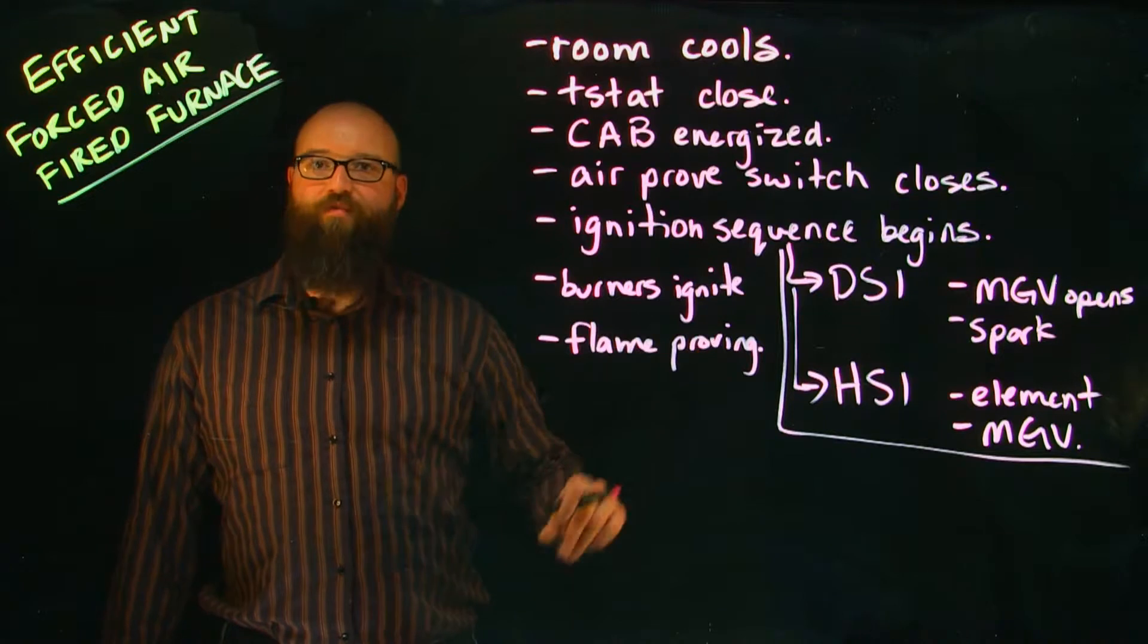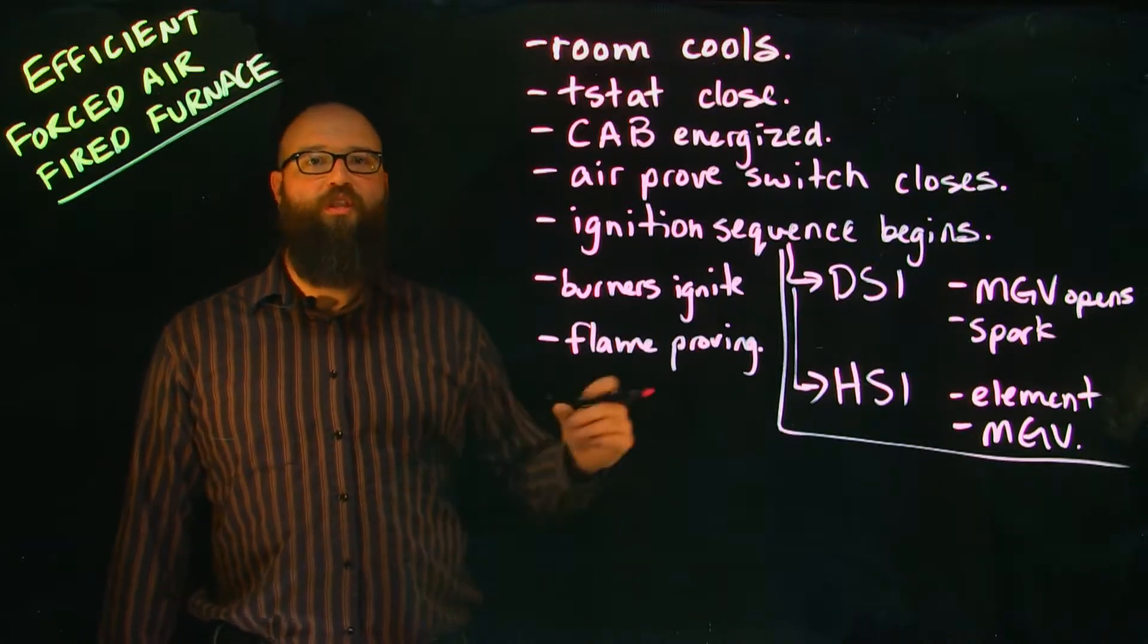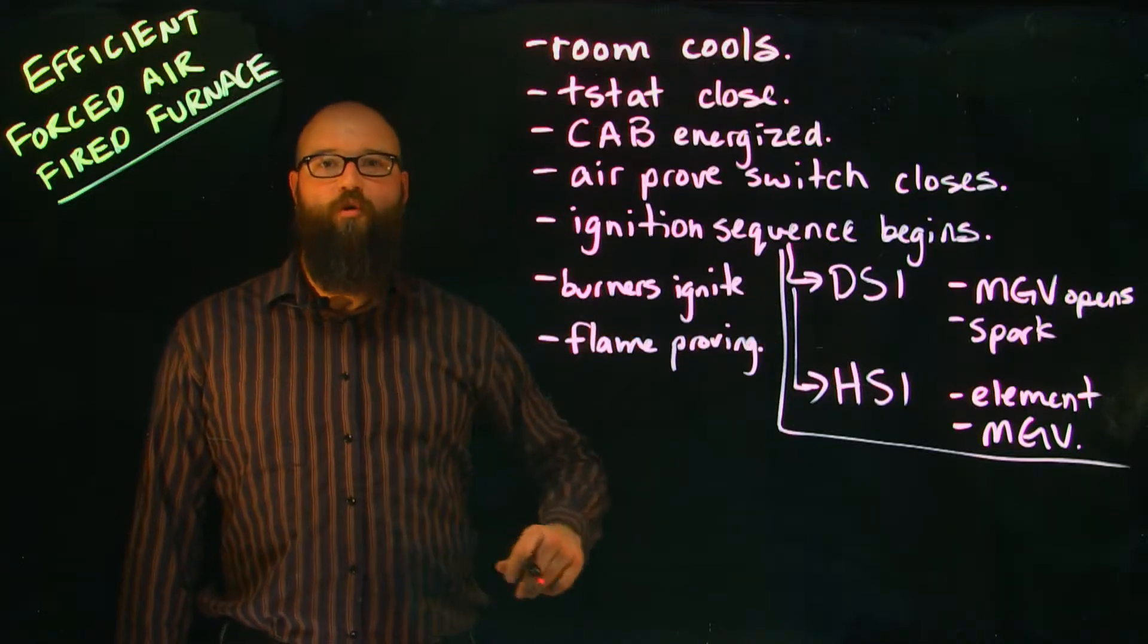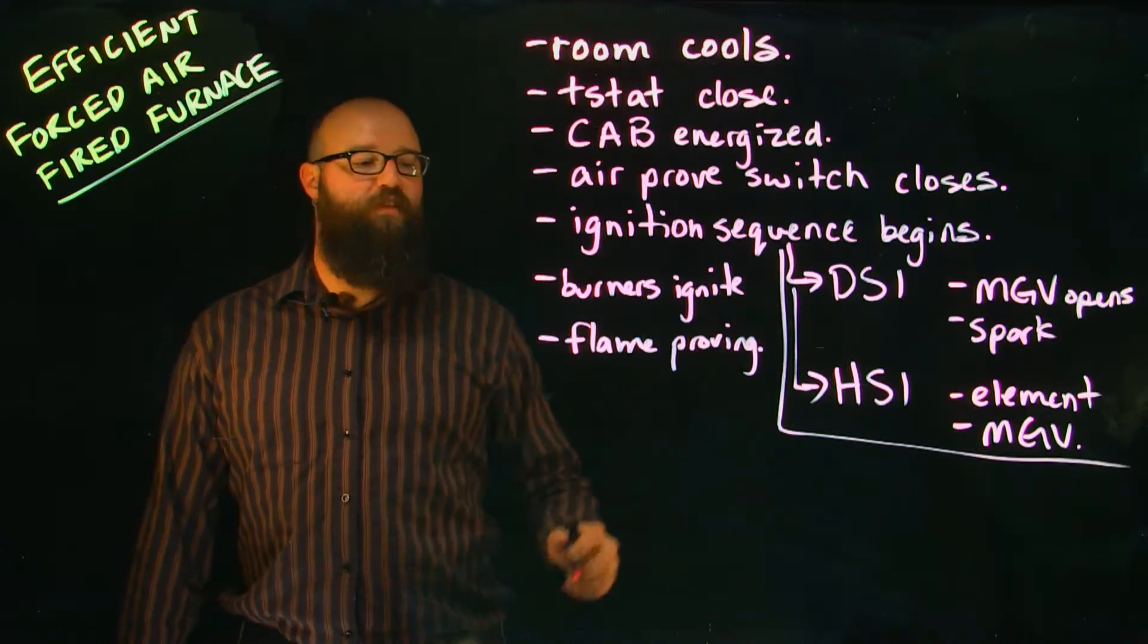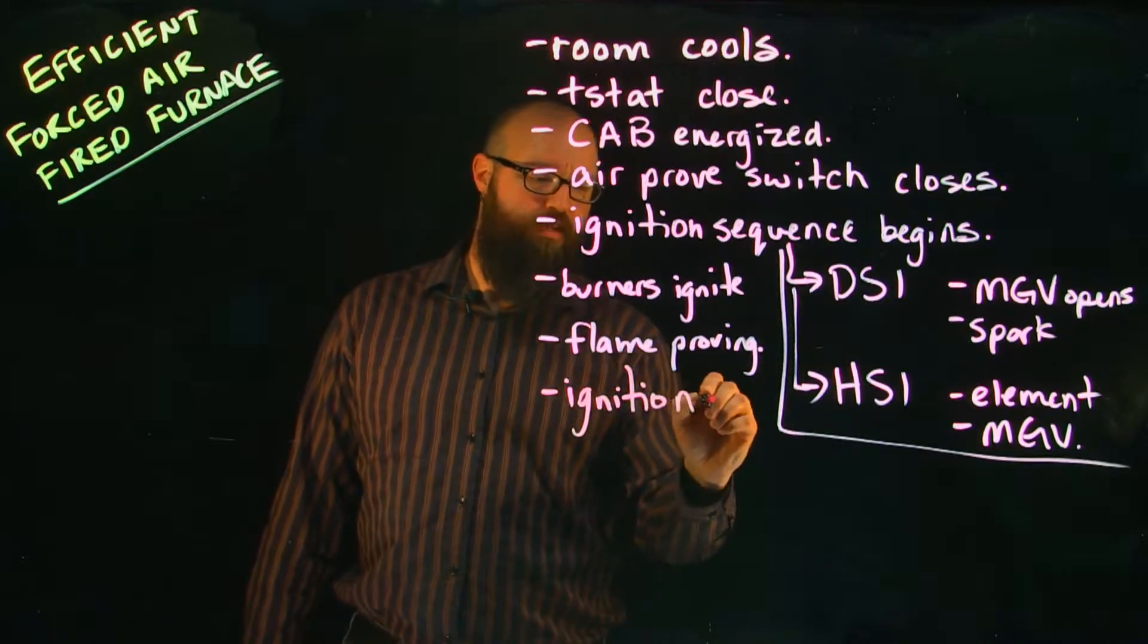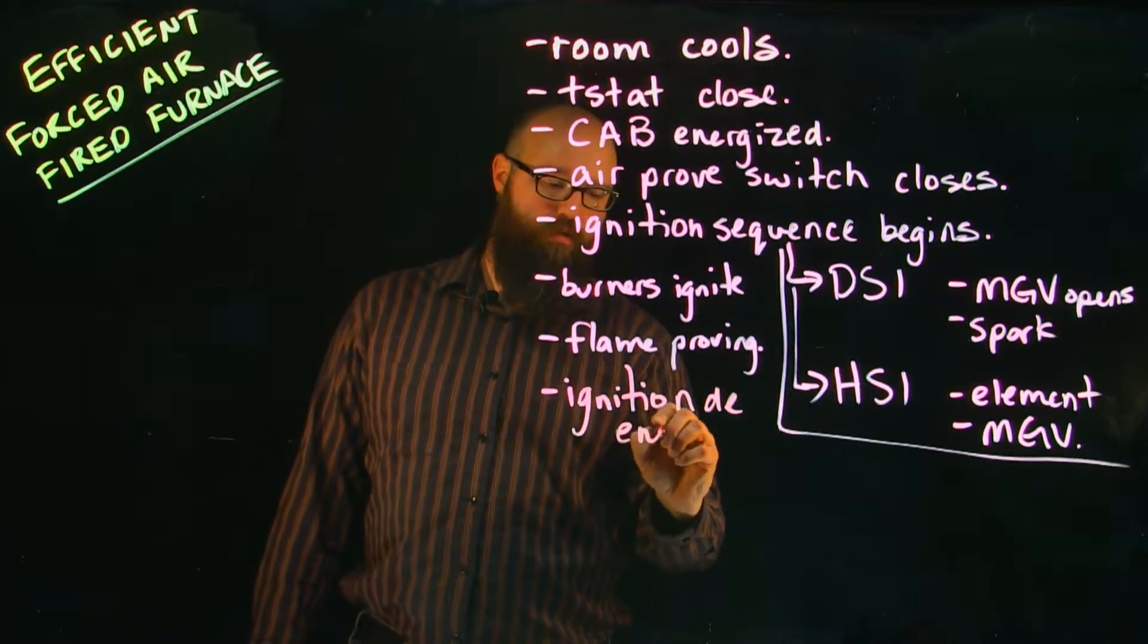We use a flame rod for flame proving. Once it's been established that there is indeed a flame at the burners, the flame proving then sends a signal back to the electronic control board telling it that it's okay to shut off the ignition sequence. So ignition de-energized.